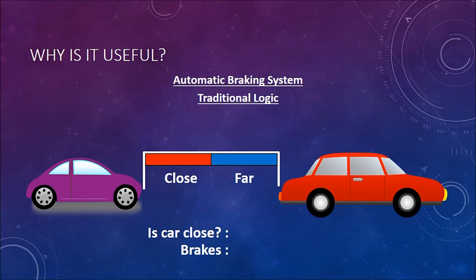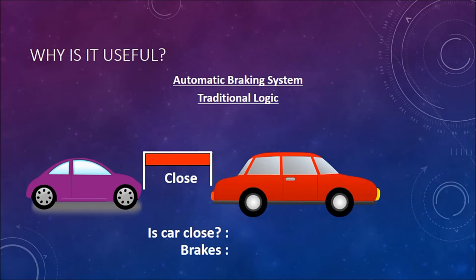So in this situation, the car is far away, so it's not close, and the brakes are off as a result. Now in this situation, the car is now close, represented by 1, and the brakes are now represented by 1 as on.